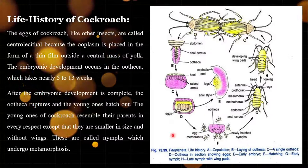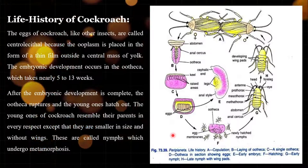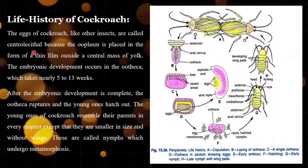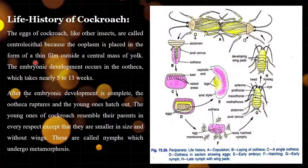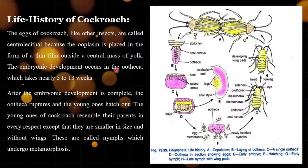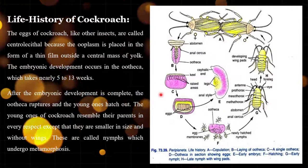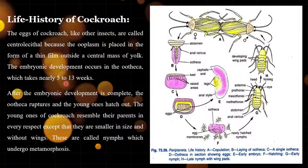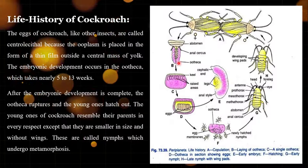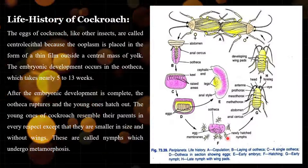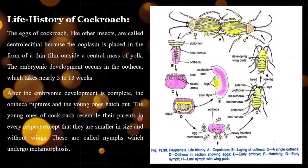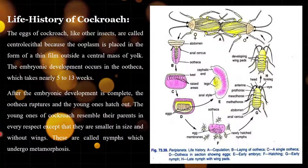The last topic of our unit is the life history of cockroach. The eggs of cockroach, like other insects, are called centrolecithal because the ooplasm is placed as a thin film outside a central mass of yolk. Embryonic development occurs in the ootheca, which takes about 5 to 13 weeks. After embryonic development is complete, the ootheca ruptures and the young ones hatch out.